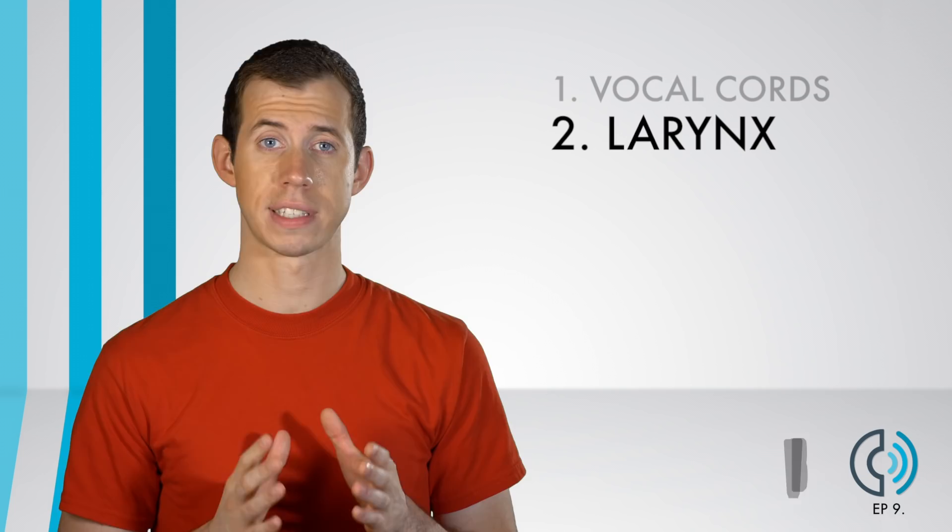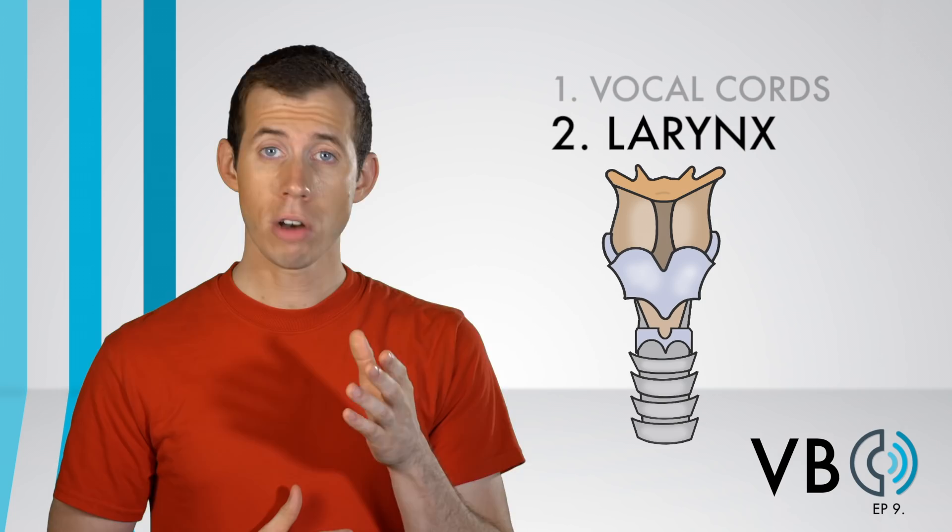Component number two: the larynx. As you probably imagine, for a voice as bright as Gilbert's, we want to raise the larynx a bit. However, there are moments when he lowers it — when you hear his voice become a bit darker, lower the larynx a hair.